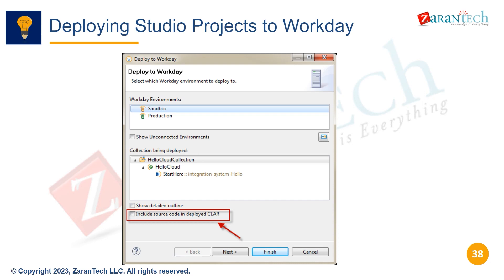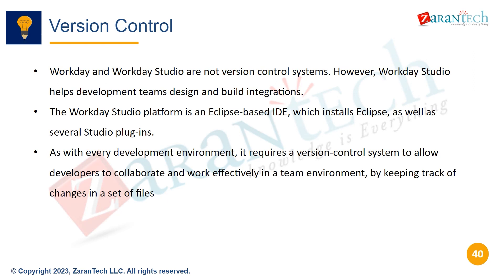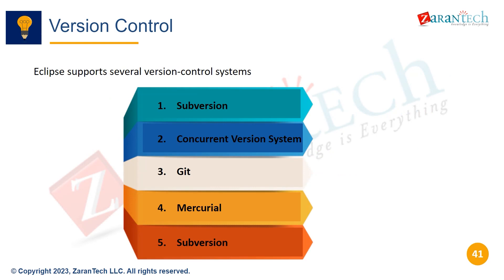Workday and Studio are not version control systems. However, Studio is based on Eclipse and integrates with Eclipse version control plugins, allowing developers to collaborate effectively by tracking changes. Eclipse supports version control systems like Git, Mercurial, CVS, and Subversion. Using version control is essential for teams building Workday integrations with Studio.